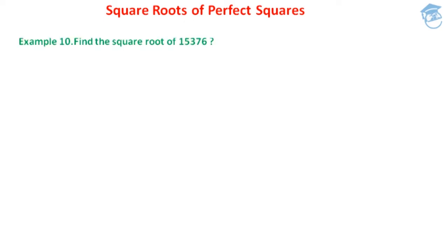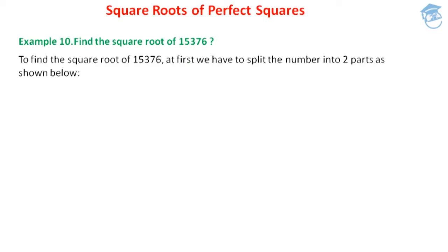The example that I am going to take in this session is: find the square root of 15376. In order to find the square root of 15376, at first we have to write the number and we have to split the number into two parts as shown below. So let us write the number first.